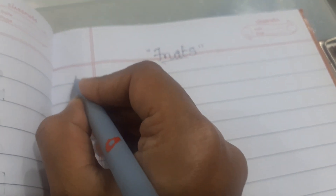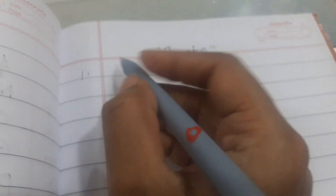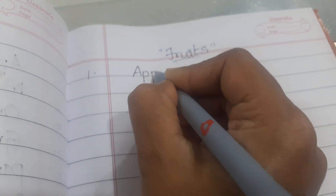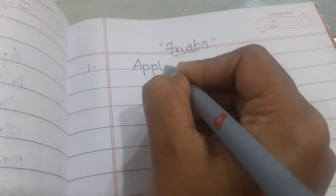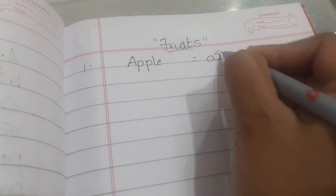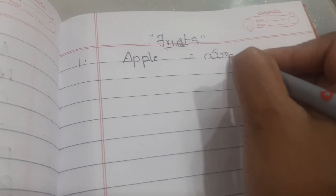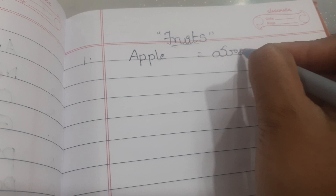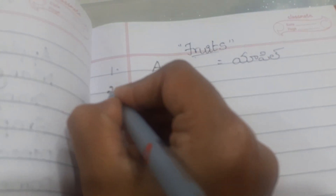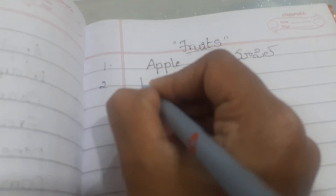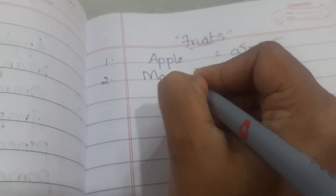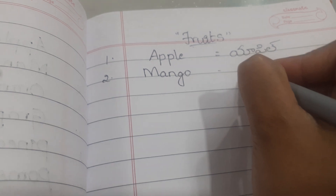First one is apple — yappil. Second one is mango — maamidi pandu.